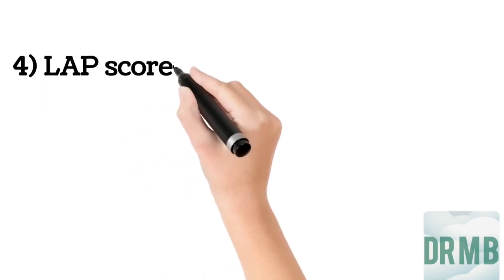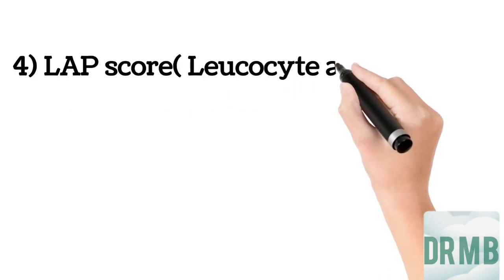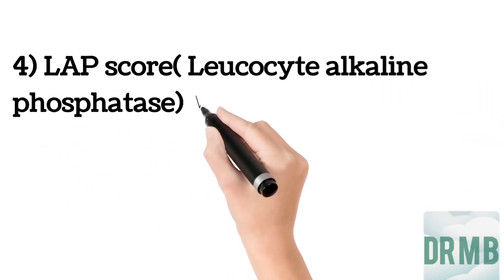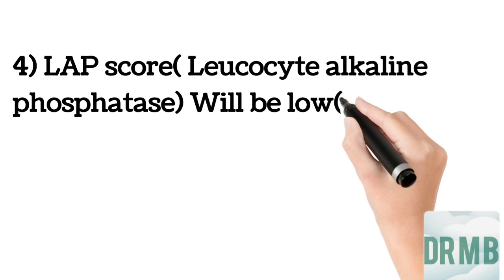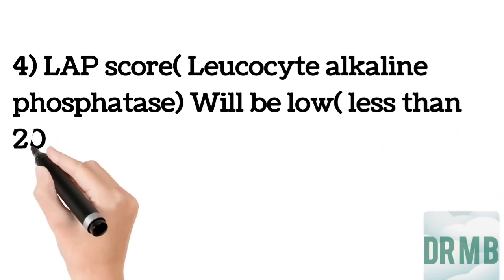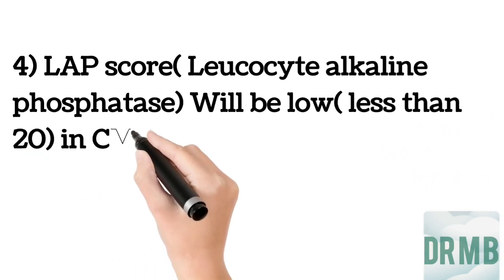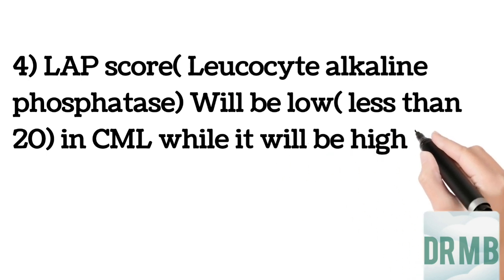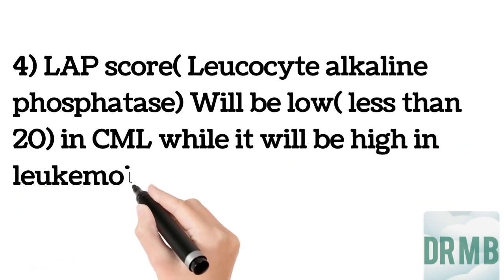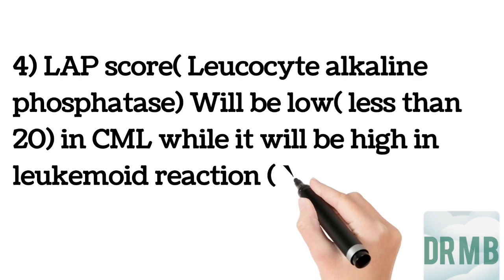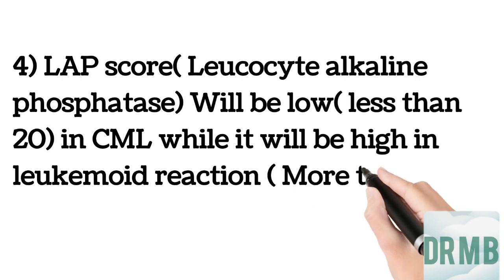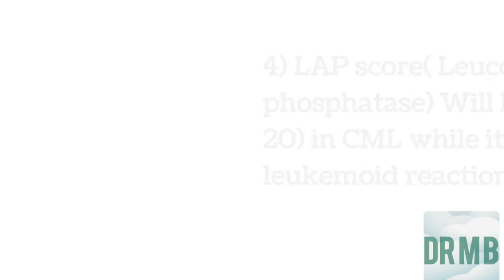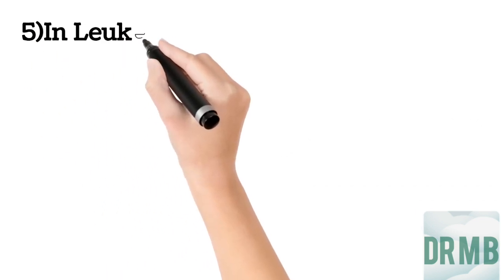Leukocyte alkaline phosphatase score is low — less than 20 — in chronic myeloid leukemia, because these are immature increased white blood cells. While the LAP score is high in leukemoid reaction — more than 100 — because these are matured increased white blood cells.